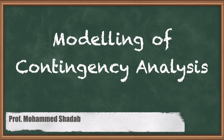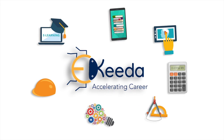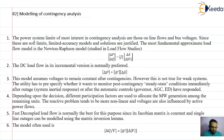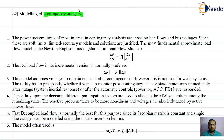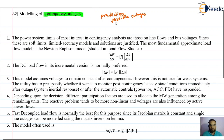In this video lecture, we are going to discuss the modeling of the power system for contingency analysis. Contingency analysis is a part of security assessment. What we get from contingency analysis is a list — it gives a prediction related to the possible outages in the future, indicating which outage is possible.